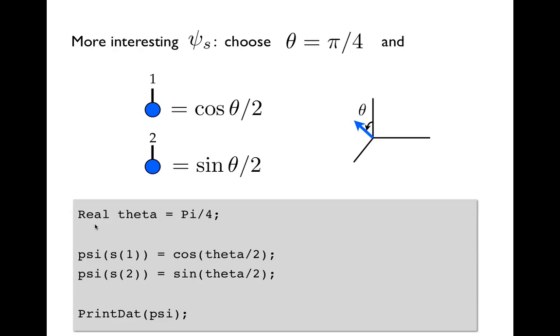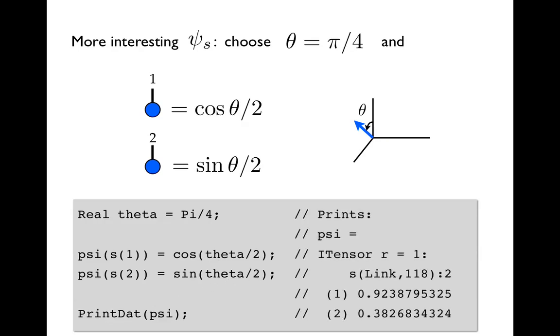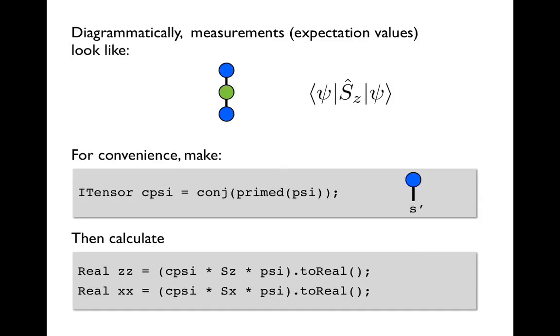So here we make a real number theta, π/4, that's our angle. We access the first and second elements of psi and set them to the cosine and sine of that angle divided by 2 and print the result. And we see that we get the appropriate answers which you can check are normalized to 1 as a wave function should be.